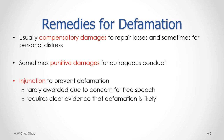The last remedy is an injunction to prevent a potential defamation. If someone knows a newspaper is about to print a story about them, they could try to get an injunction to stop the newspaper from printing it. This remedy is generally rarely awarded because courts don't want to impede freedom of expression. To get an injunction, a court has to be convinced with clear evidence that if the story is published, defamation will likely result.